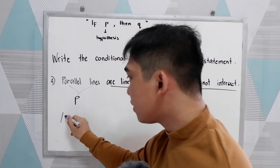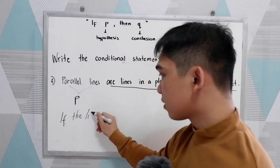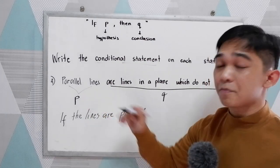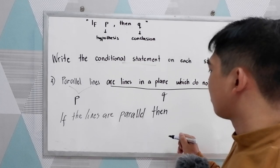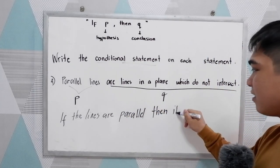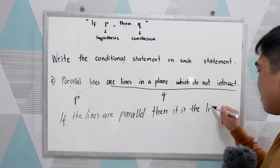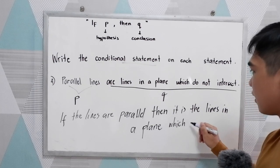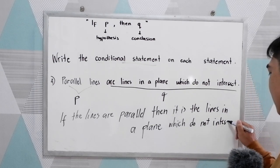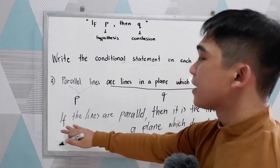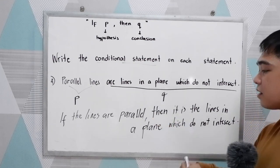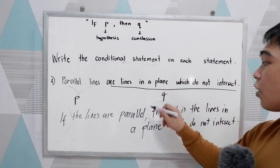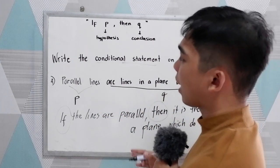Writing number four in if-then form: 'If the lines are parallel, then they are lines in a plane which do not intersect.' You can revise your sentence to come up with the correct idea.